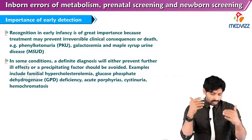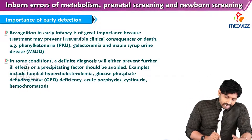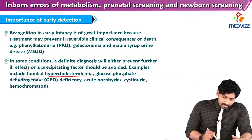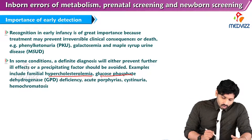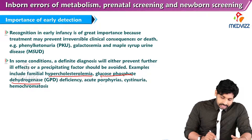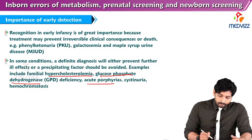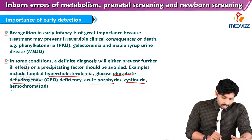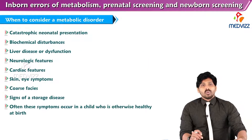Examples of such conditions include familial hypercholesterolemia, glucose-6-phosphate dehydrogenase deficiency, acute porphyrias, cystinuria, and hemochromatosis.